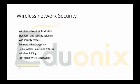Wireless network security — it's not the most secure thing in the world to use a wireless protocol, but everybody does. We're going to have an introduction into wireless networks and examine the different kinds of cryptography used, covering standards and security solutions, Wi-Fi security threats, breaking WEP encryption — really quite easy — rogue access points and attacks, which ties into man-in-the-middle attacks, wireless sniffing, and protecting your wireless network as well.